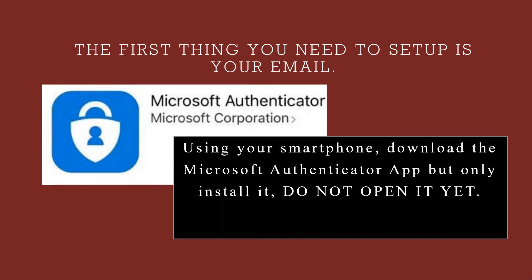We're going to start by setting up your college email account and multi-factor authentication, or MFA. MFA is a secondary method of verifying that you are you, and it does protect your account and privacy. Pick up your smartphone, go to the App Store, and download Microsoft Authenticator. Feel free to pause this video while you do that. It's very important that you install the app but not open it yet.